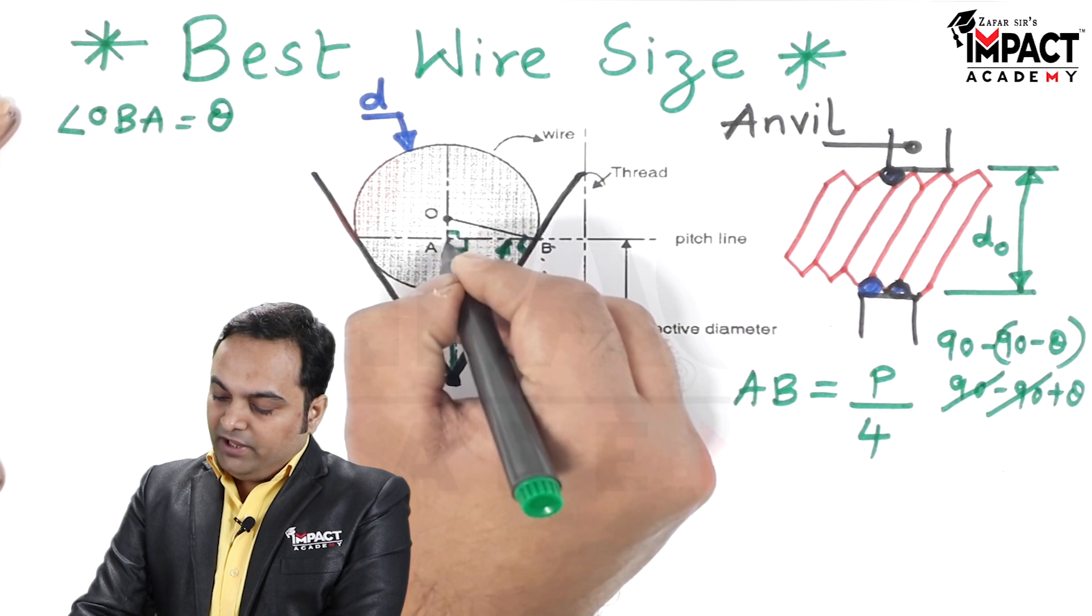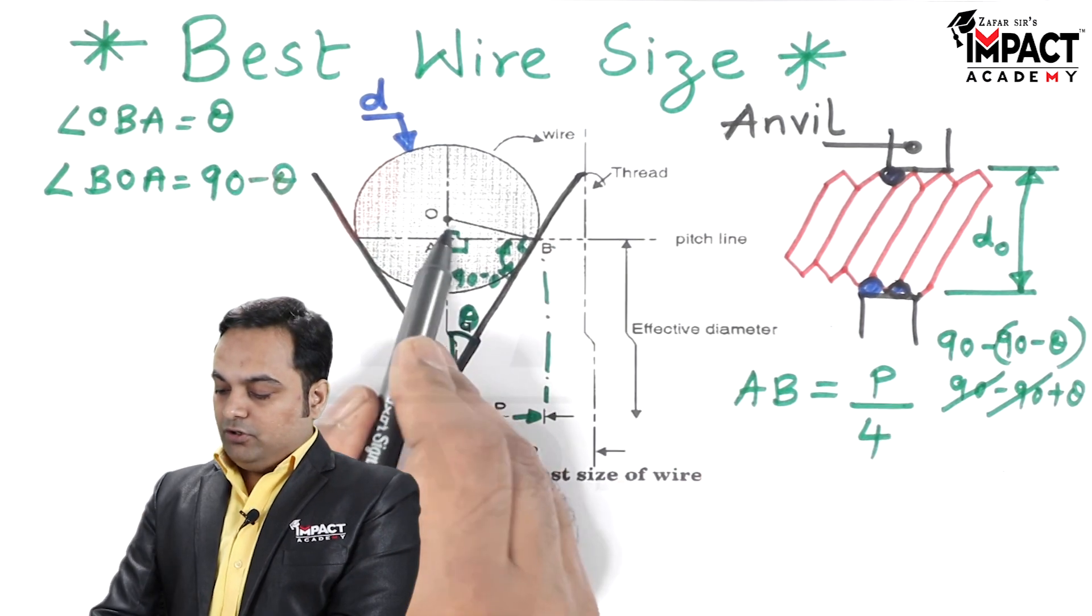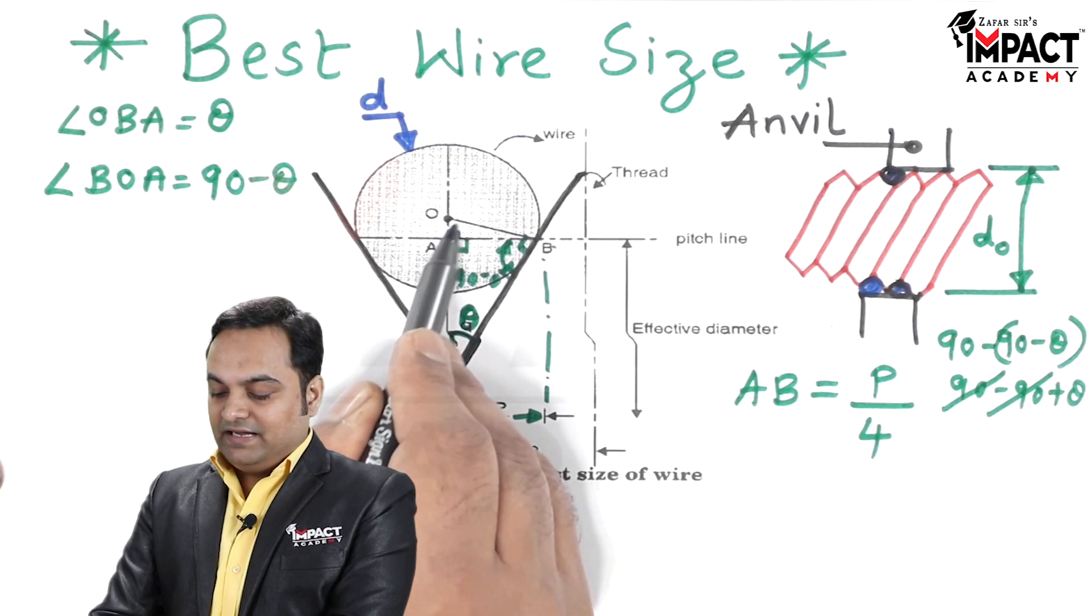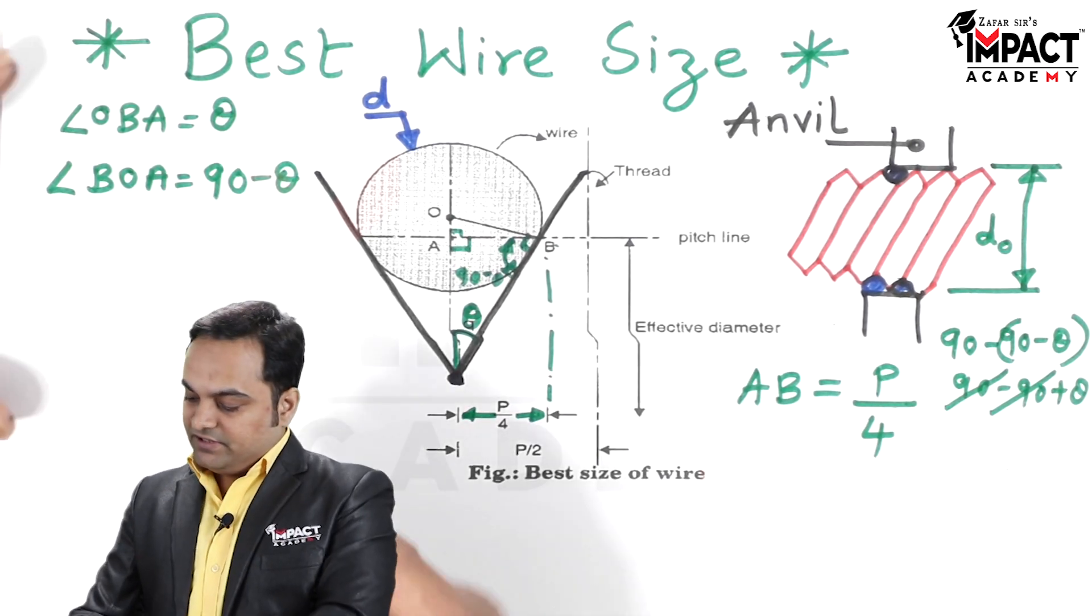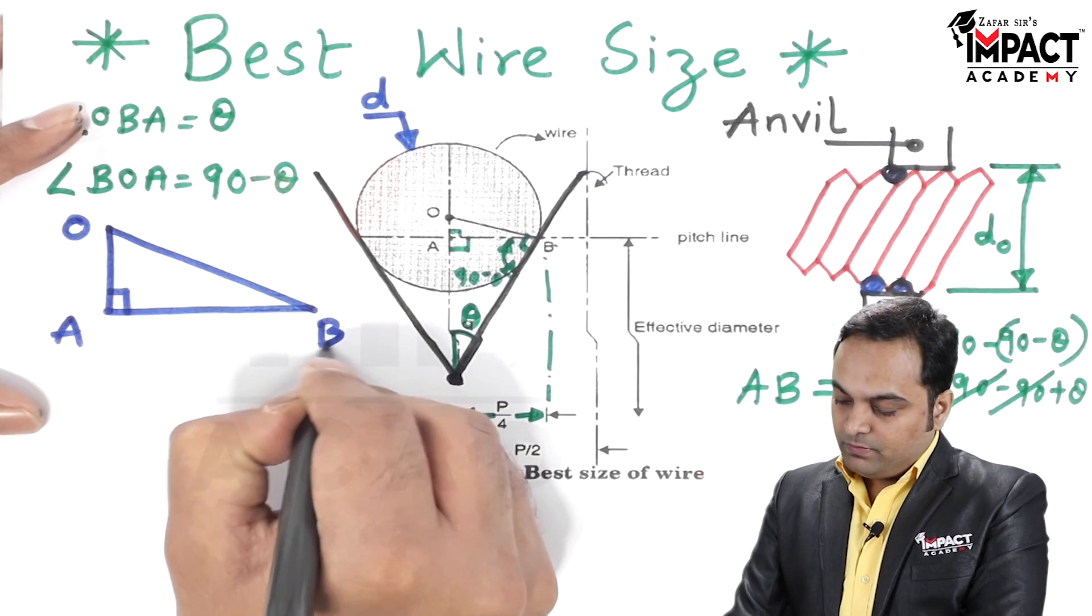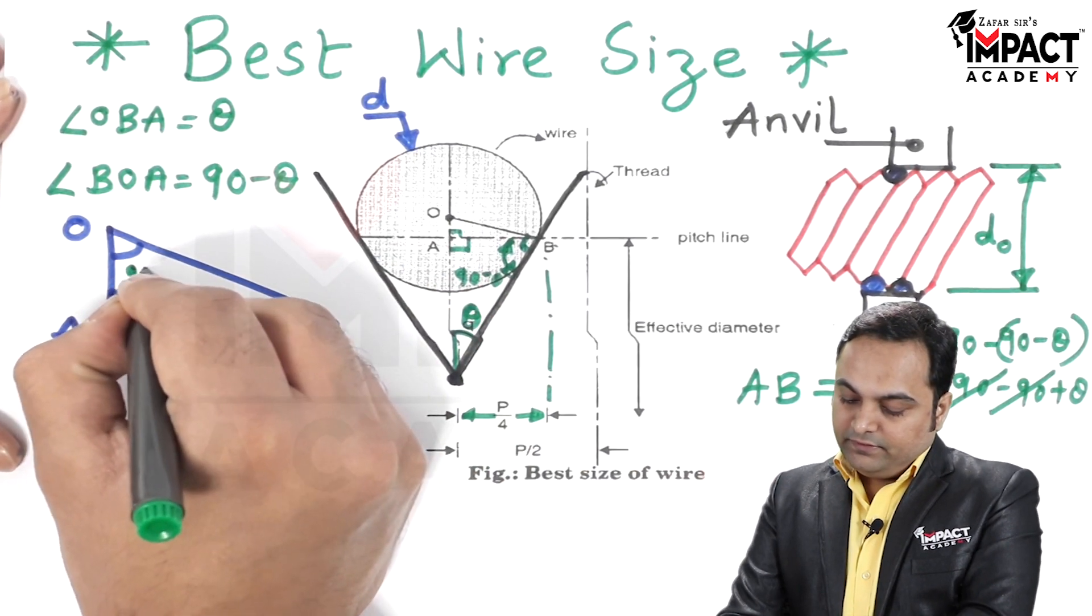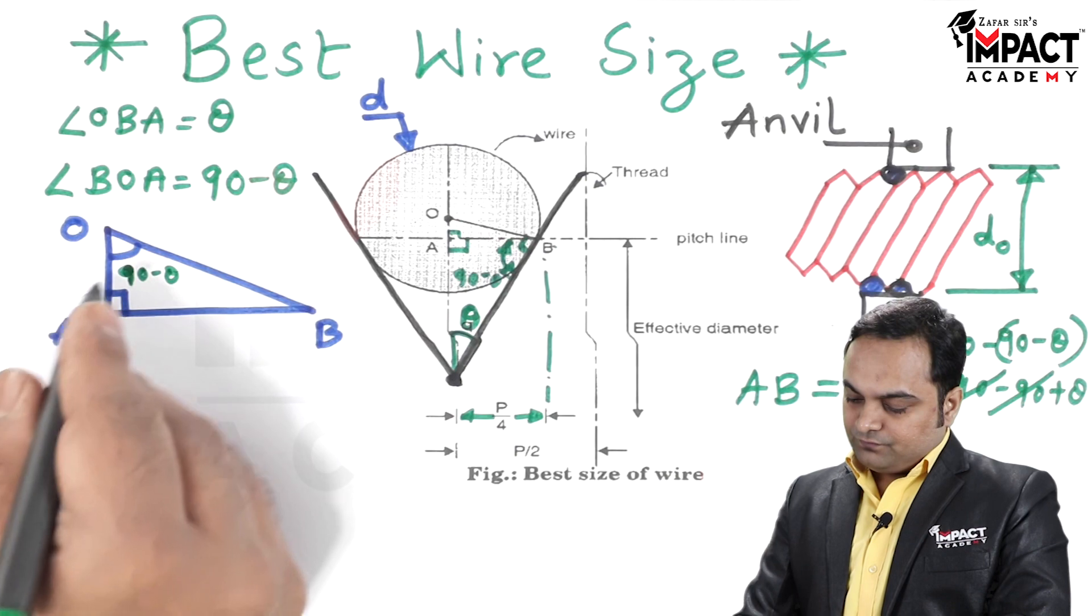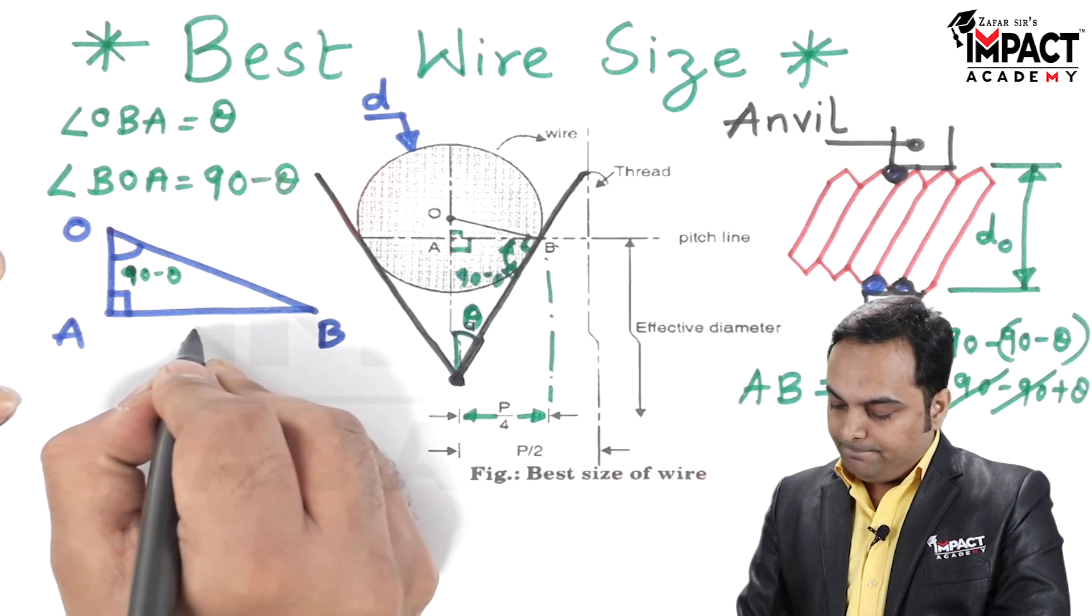And when this angle is theta, OA is perpendicular to AB, so angle BOA is equal to 90 minus theta, because OBA is theta and OAB is 90. So BOA is 90 minus theta. Now in this triangle I will just draw this triangle separately so that we can understand it over here. Angle BOA, it is 90 minus theta. And now I am taking this triangle, in this triangle I can see that distance AB is known to us, which is pitch by 4. OB distance is the radius of the wire, indicated by small r, that is the radius of the wire.